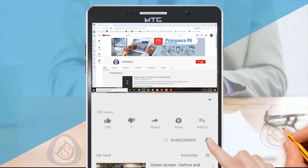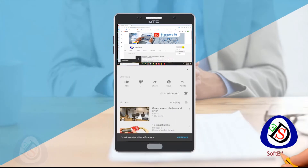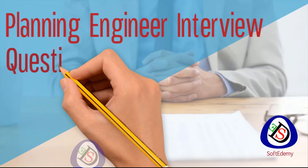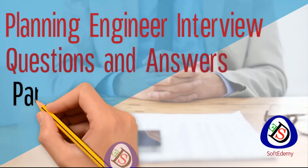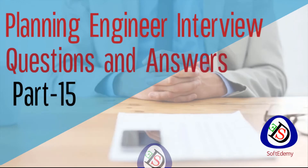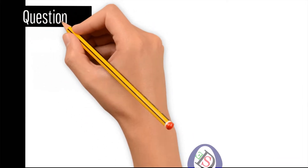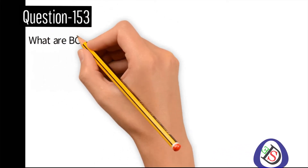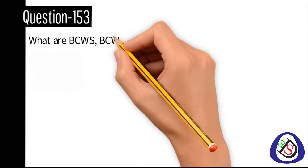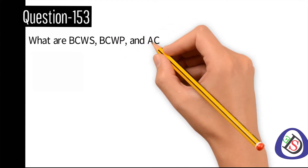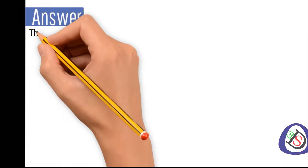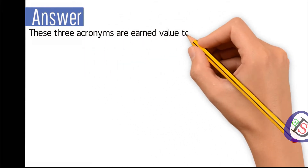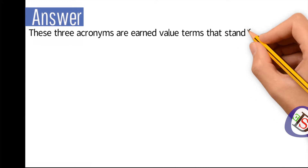Welcome viewers to Software Engineering Academy. You are watching Planning Engineers Interview Questions and Answers, part number 15. Question number 153: What are BCWS, BCWP, and ACWP?